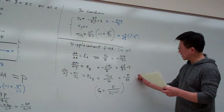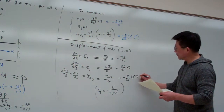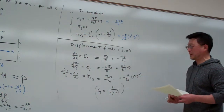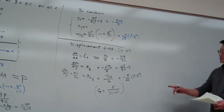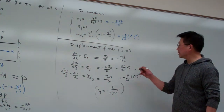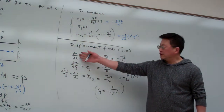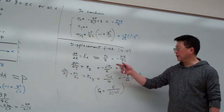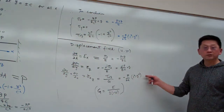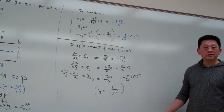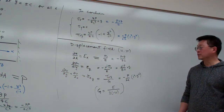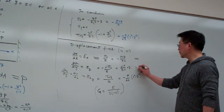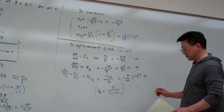So by plugging this in, epsilon X is minus PXY over EI, epsilon Y is mu times P times X times Y over EI, and gamma XY is minus P over IG. Here we have partial derivatives of the displacement components as functions of X and Y. So proceeding with detailed calculation, we can do the indefinite integral individually and see what happens.